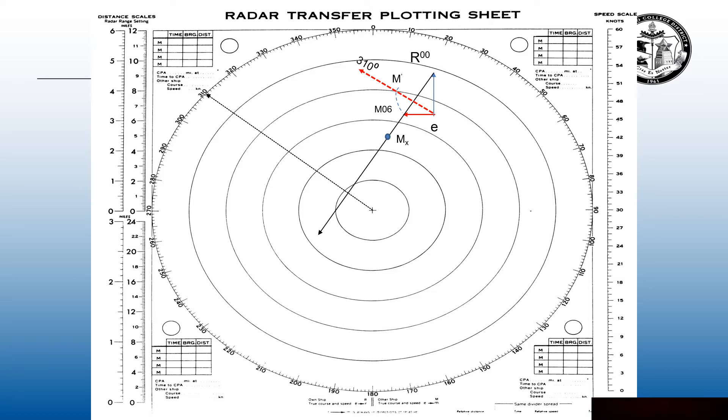If the contact changes course they're going to change relative motion. The old relative motion was R00 to M06. So I can draw a new relative motion line then parallel that down to 5 miles at MX and I can get a new CPA and bearing of CPA.